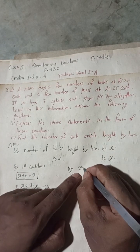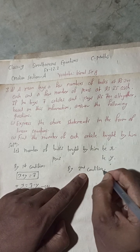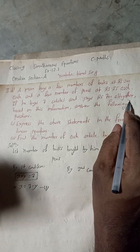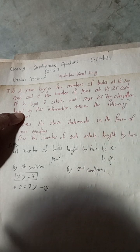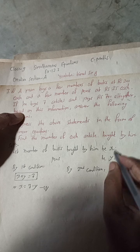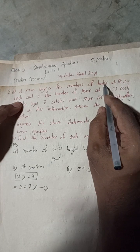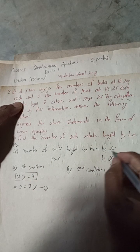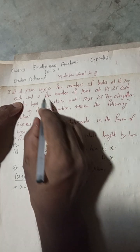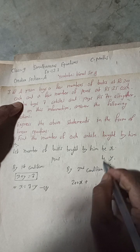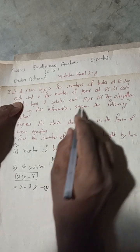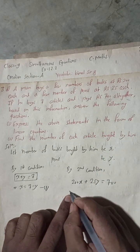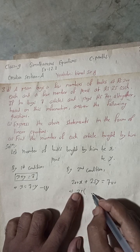By the second condition, he paid Rs700 altogether. He bought x books and each book costs Rs200, so x books will cost 200x. Plus one pen is Rs25, so for y pens this will be 25y. And he paid Rs700, so 200x plus 25y equals 700. We will simplify this — take 25 as common, so this becomes 25 times (8x plus y) equals 700.